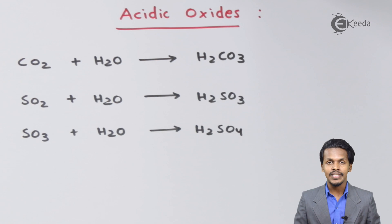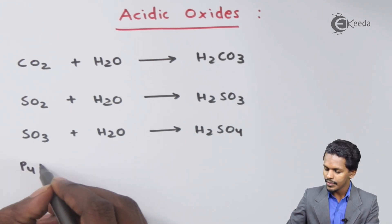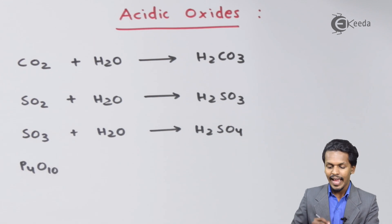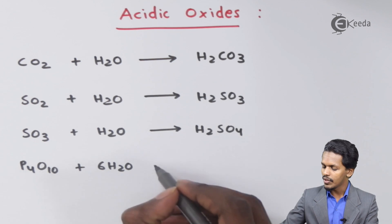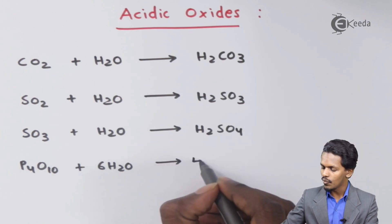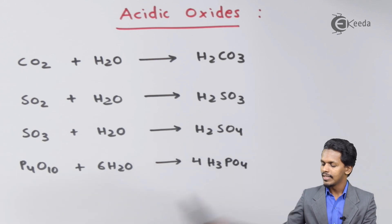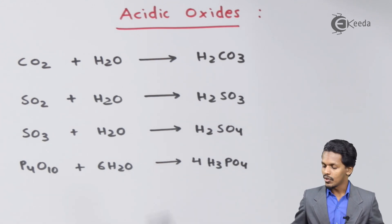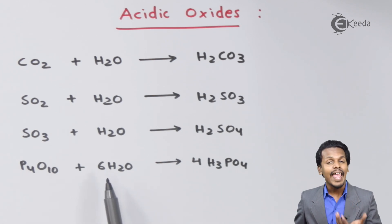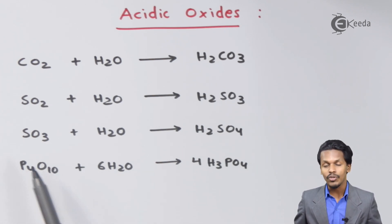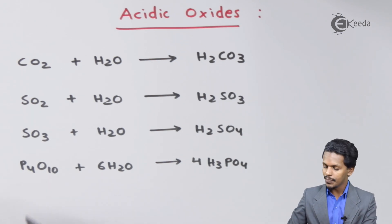Another example is P4O10. If P4O10 is reacted with six moles of H2O, the product we get is four moles of H3PO4, which is known as phosphoric acid. Again, an acid is produced due to the action of H2O on this oxide, making P4O10 an acidic oxide.